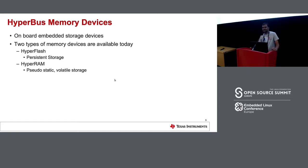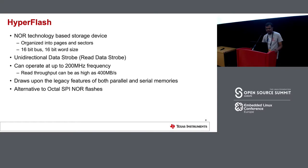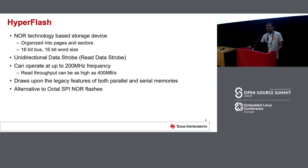There are two types of HyperBus memory devices today in the market. The first one is HyperFlash, which is persistent storage similar to SPI NOR flashes. And there is HyperRAM, which is a pseudo-static RAM for read-write capabilities. HyperFlash devices are mostly used on embedded devices. Since it's an eight-line bus working in DDR mode, it's effectively a 16-bit bus — you can transfer 16 bits of data per clock.